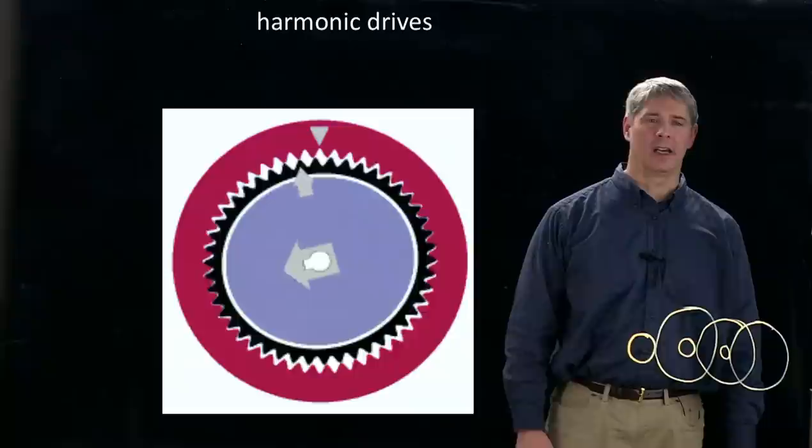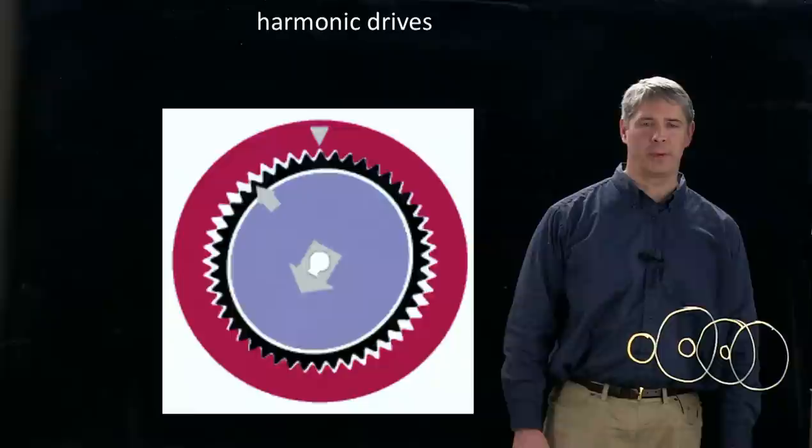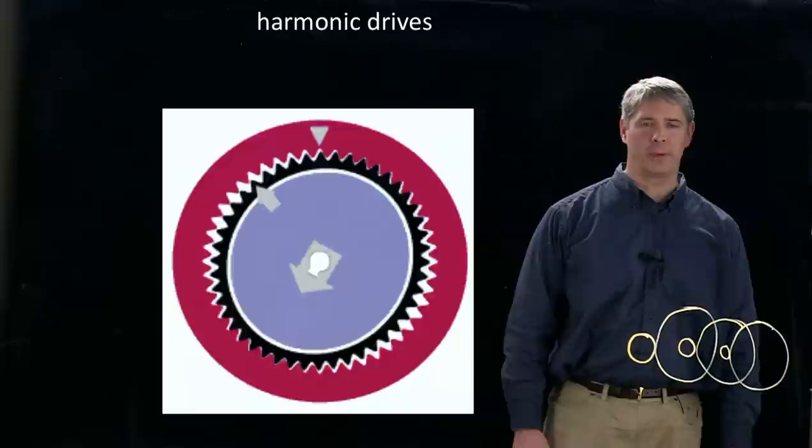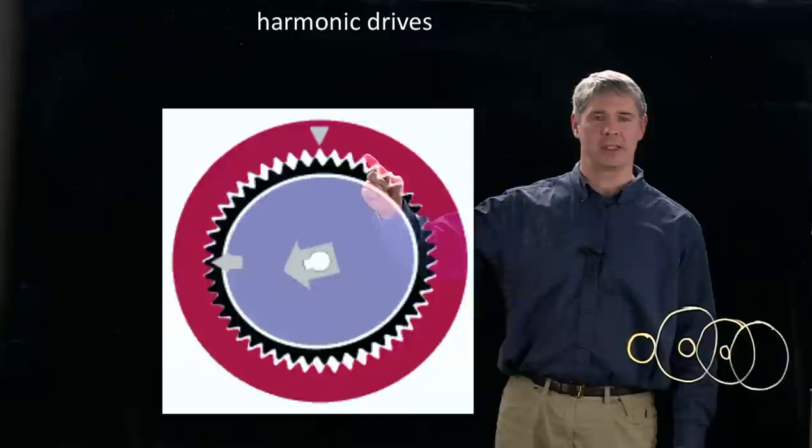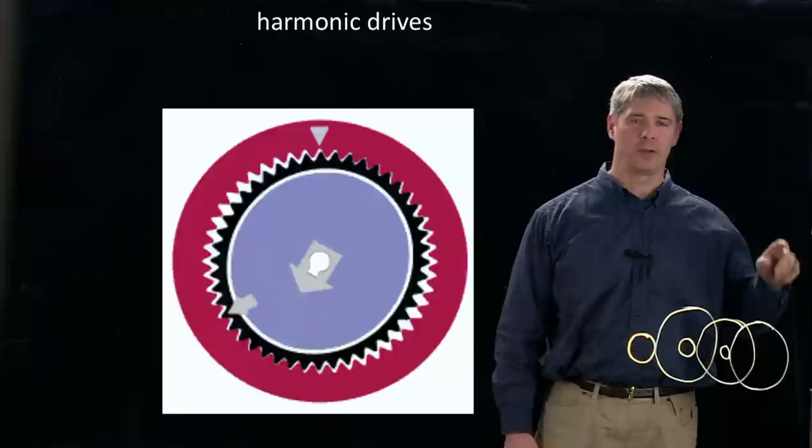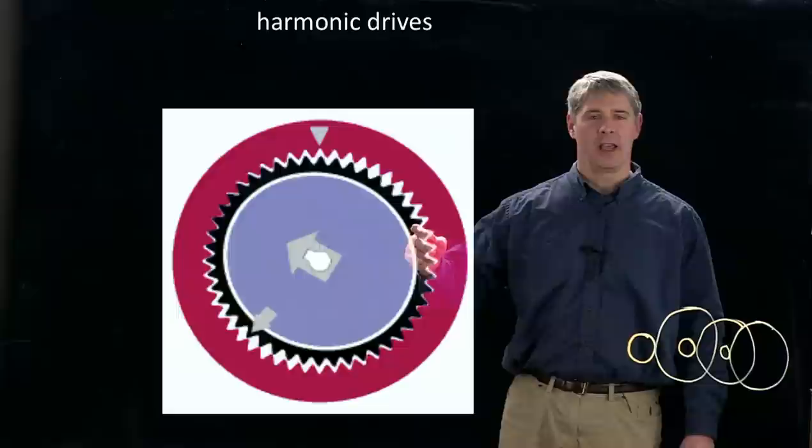And here's an interesting gear head. It's a little complicated to understand, but it's called a harmonic drive. And the input is this elliptical wave generator. So this is attached to the output of the motor shaft. And it's turning this ellipse. And attached to this ellipse is a flexible spline, this thing colored black.